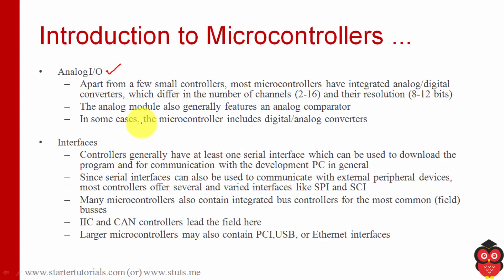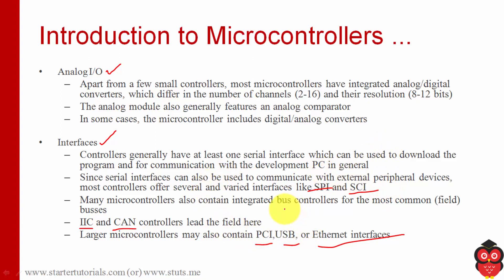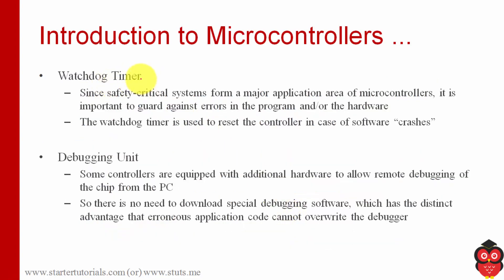Microcontrollers support different kinds of interfaces — serial peripheral interfaces (SPI), SCI interfaces, inter-integrated circuit (I2C) interfaces, CAN interfaces, PCI interfaces, USB interfaces, and Ethernet interfaces — all used for attaching different devices to the microcontroller. There is also a watchdog timer module, which is different from the regular timer/counter module and is used to protect the device from errors or crashes. Finally, there is a debugging unit for debugging the program. These are the different components in a microcontroller.